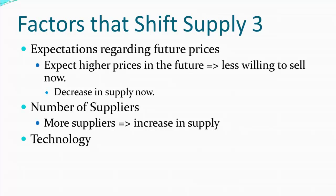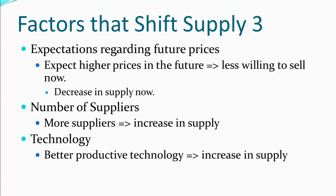Another factor is what we call technology. Technology here I have in mind not the invention of consumer electronics like iPads and personal computers, but rather technology that's used in production to make it more efficient. So if we have better productive technology — that is, we find ways to produce the same stuff more cheaply — that would tend to increase supply, for exactly the same reason as when the price of inputs decreases. If it gets cheaper for us to produce something, we tend to produce more of it.